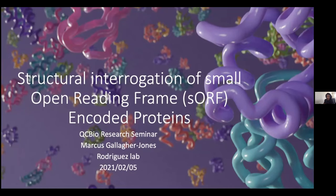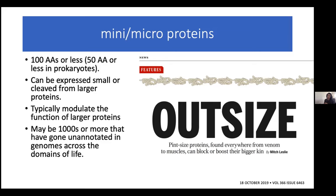These are proteins that are in eukaryotes less than 100 amino acids, and in prokaryotes less than 50 amino acids. To start off, we'll talk a little about mini or microproteins, as they're typically referred to in the literature. These are small proteins — very short polypeptide chains. Think of the average functional protein as maybe 200 to 400 amino acids; these are only a fraction of the size.